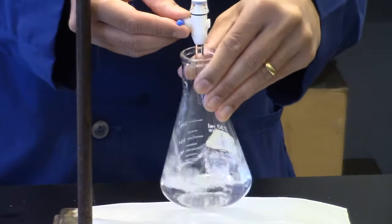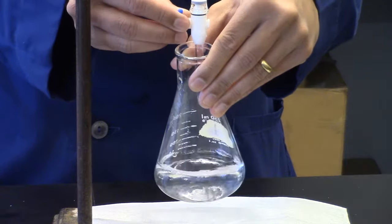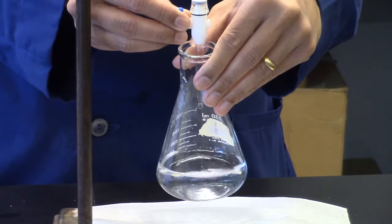When you start to see the pink color while adding sodium hydroxide, slow your rate of addition. The pink color will persist longer and require swirling.